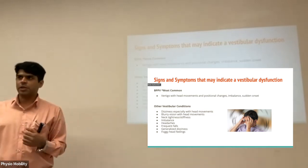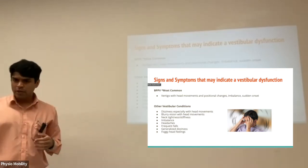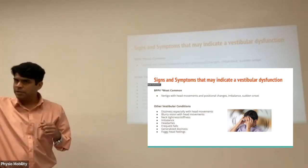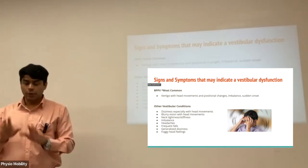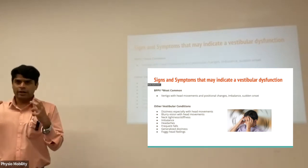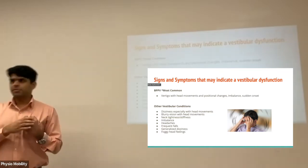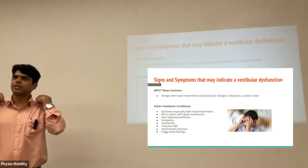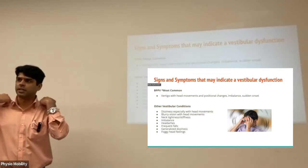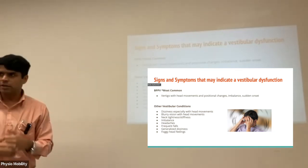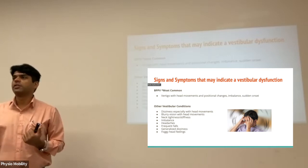Other signs and symptoms include dizziness especially with head movements — so you turn to your right, feel a little woozy for a couple of seconds, then things go back to normal. Blurring of vision with head movements, where you turn quickly and it takes a couple of seconds to focus on what you want to look at. Neck tightness and stiffness — if you have dizziness all the time, very reflexively we tend to tense up, and when that happens repeatedly your neck begins to feel tight. Some people say their neck started hurting since they had BPPV — that's because they're constantly tensing up. Imbalance and loss of balance is very, very common with vestibular dysfunction, which ties back to the increased fall risk mentioned earlier.